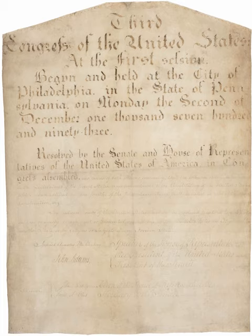New York, March 27, 1794; Rhode Island, March 31, 1794; Connecticut, May 8, 1794; New Hampshire, June 16, 1794; Massachusetts, June 26, 1794; Vermont, November 9, 1794; Virginia, November 18, 1794; Georgia, November 29, 1794; Kentucky, December 7, 1794; Maryland, December 26, 1794; Delaware, January 23, 1795; North Carolina, February 7, 1795. As there were fifteen states at the time, the ratification by twelve states added the Eleventh Amendment to the Constitution.